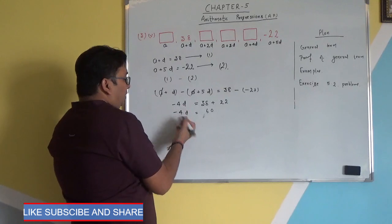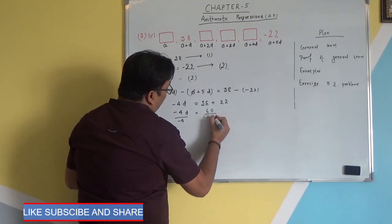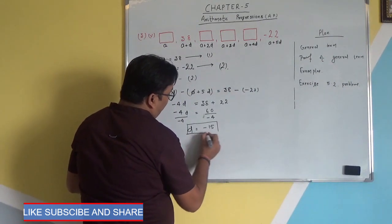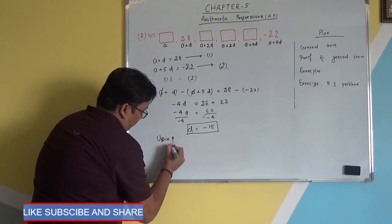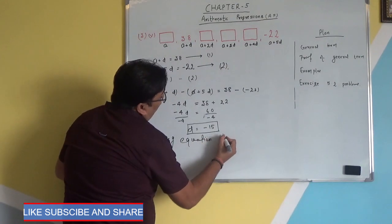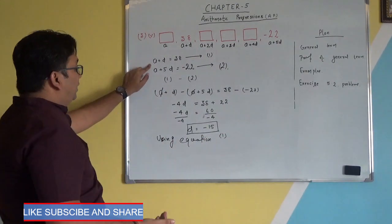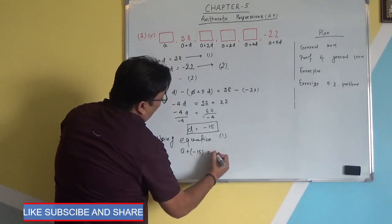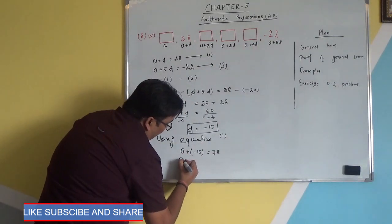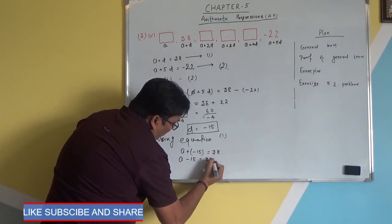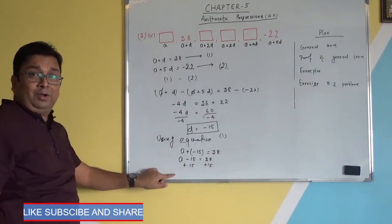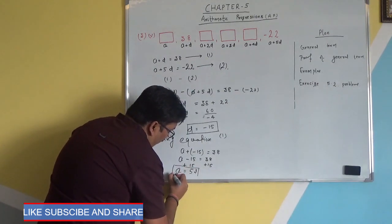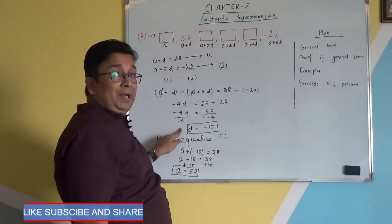Dividing both sides by minus 4, d equals minus 15. Now we have d's value. Using equation 1, we substitute d equals minus 15: a plus minus 15 equals 38, so a minus 15 equals 38. Adding plus 15 to both sides, the minus 15 eliminates and a equals 53. So both unknowns are known: a is 53 and d is minus 15.